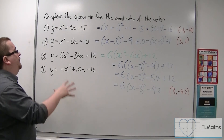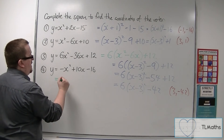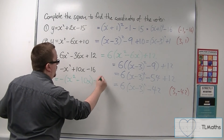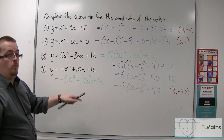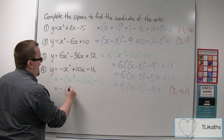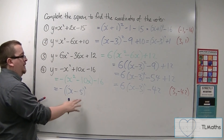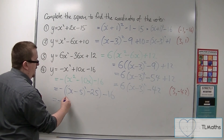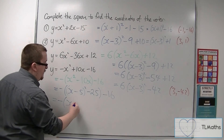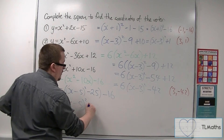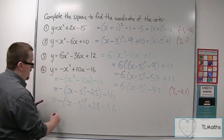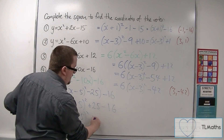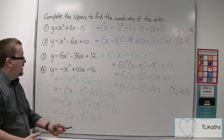For number 4, we use a similar process. First, take minus 1 outside of the first two terms, writing it as minus open bracket x squared minus 10x, take away 16. Then complete the square of what's inside the bracket: minus x minus 5 all squared — halving the 10 — take away 25, with minus 16 still on the outside. Multiplying through by minus 1: minus x minus 5 all squared, minus minus 25 gives plus 25, and taking away 16 gives 9. So the coordinates of the vertex are 5, 9.